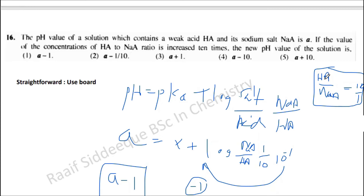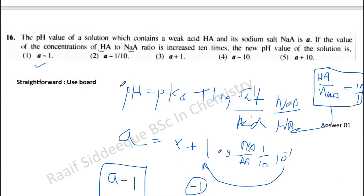In fact, if the ratio were the other way around, it would be a plus 1. But here, since they are increasing HA to NaA, the reciprocal applies when you plug into the equation with NaA over HA. So this is straightforward — the answer is a minus 1.